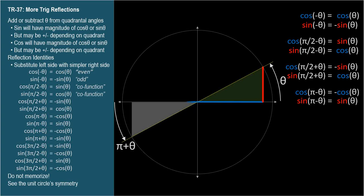Here's our triangle. Both trig functions are in the opposite direction to theta's. So cosine of pi plus theta equals negative cosine theta, and sine of pi plus theta equals negative sine theta. Pretty easy to see on the unit circle, right?